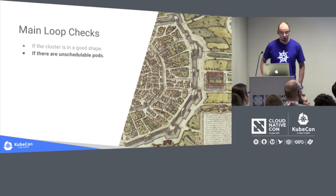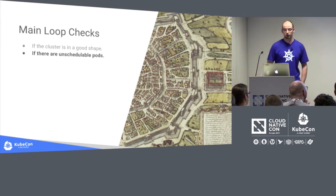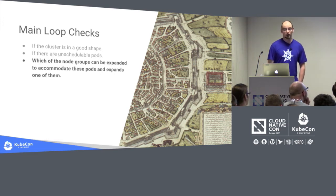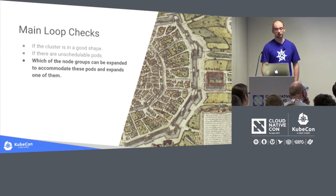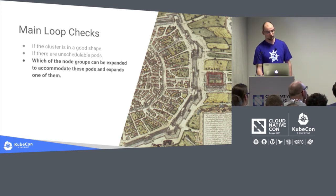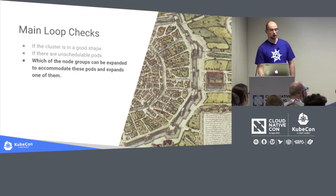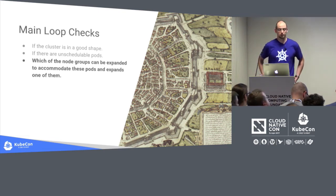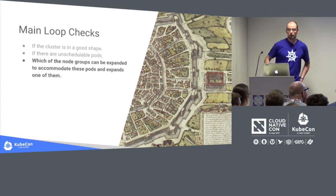After checking cluster state, it looks for unschedulable pods — pods for which the Kubernetes scheduler failed to find a place and marked them accordingly. If there are unschedulable pods, cluster autoscaler runs simulations to check which node group, if expanded, could accommodate the pending pods. It's important here that new nodes will look similar to existing ones — cluster autoscaler looks at existing nodes and tries to guess what a new node would look like. If a node group could be expanded, it increases its size so pending pods get a place to live.